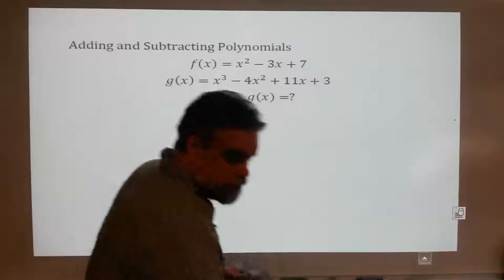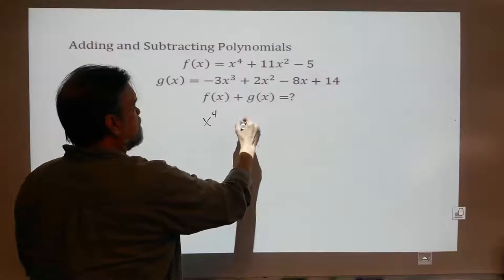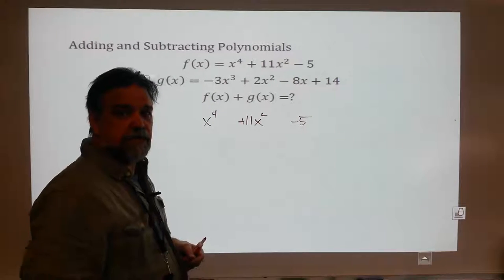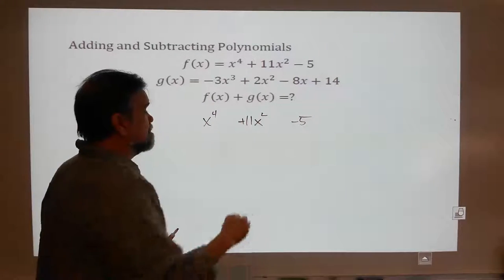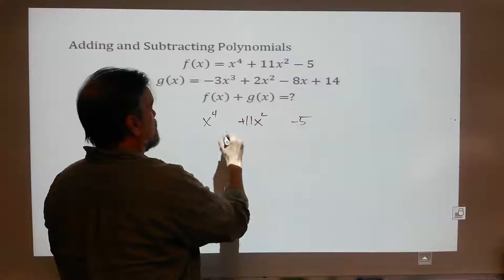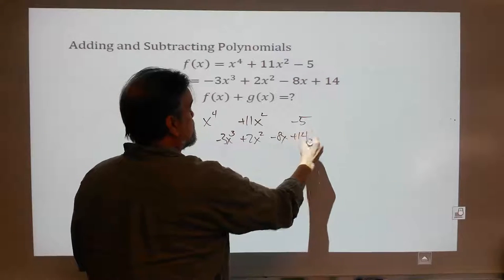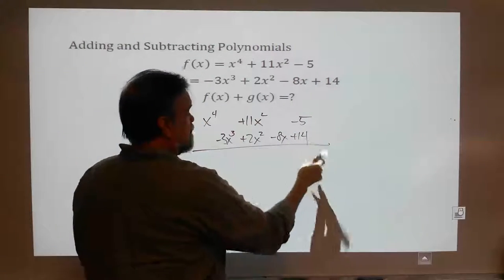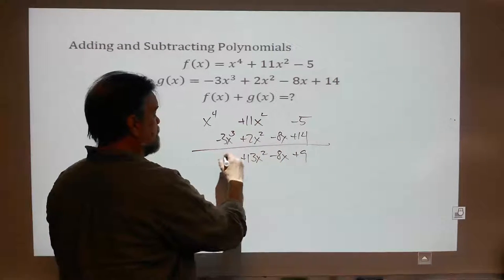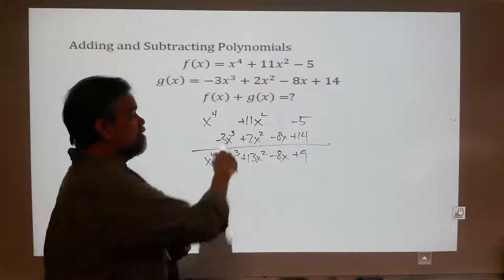Let's look at another one. This time we have x to the fourth, and I'm going to leave a little gap — plus 11x squared — and another little gap, minus 5. Why am I leaving gaps? Because place value is important. Here would be my x cubed term, here would be my x's. Now when I add negative 3x cubed plus 2x squared minus 8x plus 14, I get negative 5 plus 14 is 9, minus 8x, plus 13x squared, minus 3x cubed, and x to the fourth. Be careful with that place value.